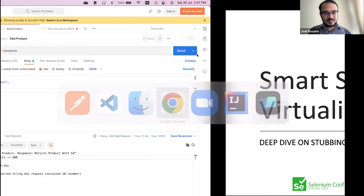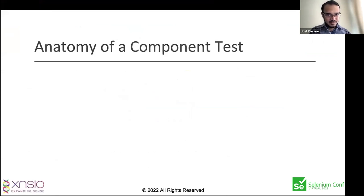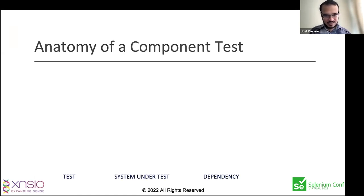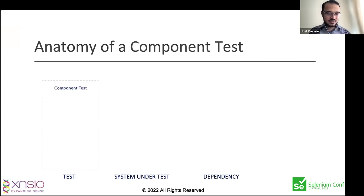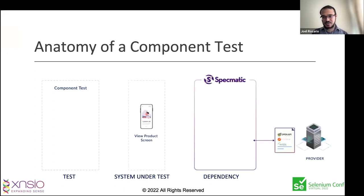This is the anatomy of a test. I'm going to take this further and show how it works with actual code. You have a test, a system under test, and a dependency — that's how it typically works. On a component developer's laptop, there is a test which invokes a system under test, which hits a dependency. The test could be a component test using Selenium, Appium, Karate, or similar — for example, hitting some mobile app or product screen.